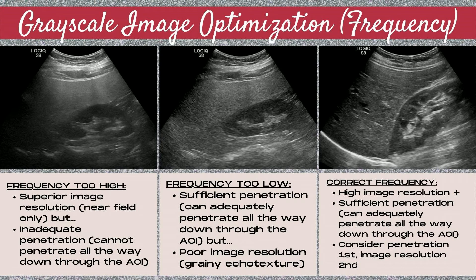Now let's look at some examples. In the image to the far left, the frequency is set too high. There's superior image resolution in the near field — the top of the image — but there's inadequate penetration; you cannot penetrate all the way down through the area of interest, which is the liver at the bottom. You can barely even see the diaphragm. In the next image, the frequency is set too low. There's sufficient penetration — you can adequately see all the way through the liver — however, there's poor image resolution; note how grainy the echo texture is. In this case, I set the frequency lower and lower until I could see through the liver and then kept going even lower, so I could actually bump the frequency up one more level and still penetrate, which would improve image resolution and make the image less grainy.